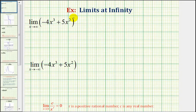First, we have the limit as x approaches positive infinity of negative four x cubed plus five x squared. So what we're trying to do here is determine what's happening to the function value as x increases in the positive direction without bound. And there are a couple ways of doing this.